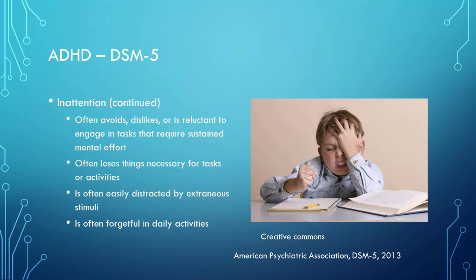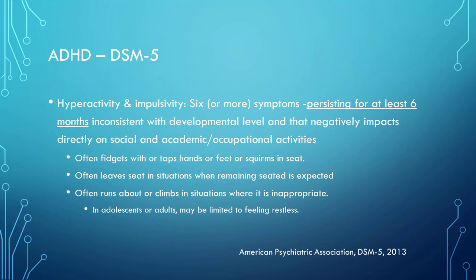Hyperactivity and impulsivity include six or more symptoms persisting for at least six months, inconsistent with the developmental level of the child, that negatively impacts directly on social and academic occupational activities. These include often fidgeting with or tapping hands or feet or squirming in their seat; often leaving their seat in situations when remaining seated is expected; and often running about or climbing in situations where it is inappropriate — or in adolescents and adults, this may be limited to feelings of restlessness.